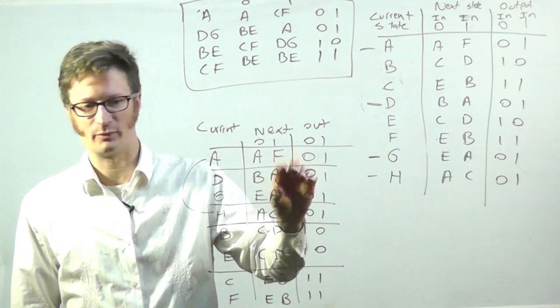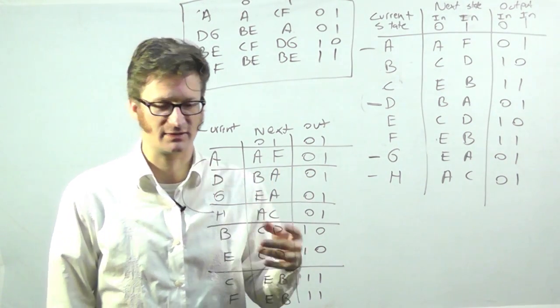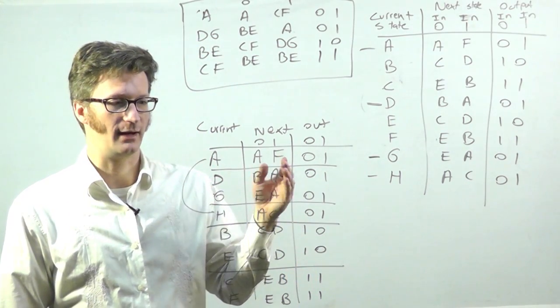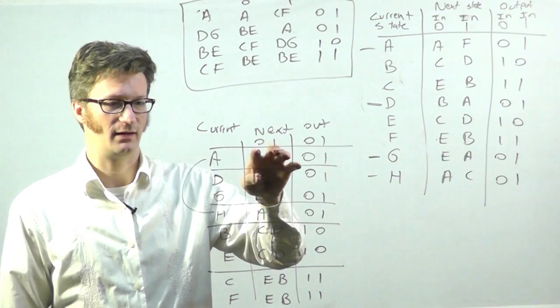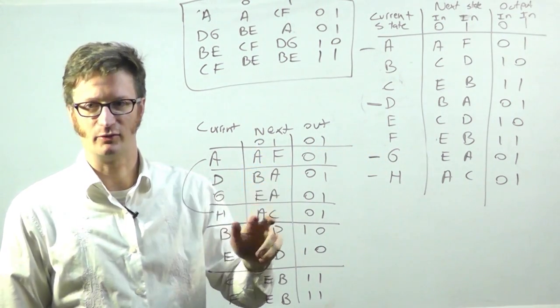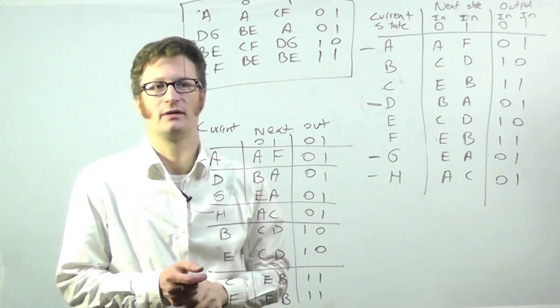And you want to separate them into groups. And maybe this is a three or four pass process, but eventually you're going to end up at an optimized state table, where within a group, they have identical output, and they jump to equivalent groups. So there you go.